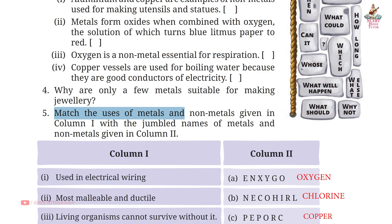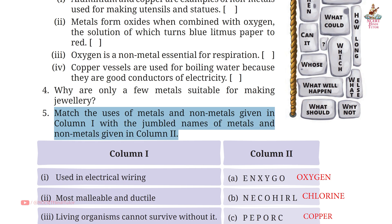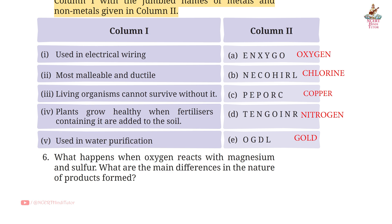Question 5: Match the uses of metals and non-metals in column 1 with the names in column 2. First: Used in electrical wiring — Answer C: Copper.